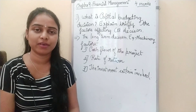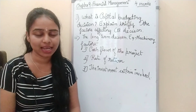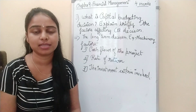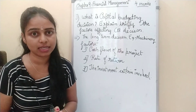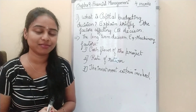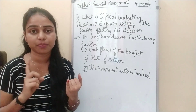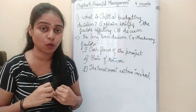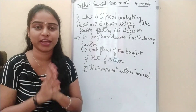Hello everyone, welcome back to CMAS Academy and welcome to the Second PUC Business Studies Easy Class Series. In the last video, we started with Chapter 9: Financial Management. We quickly revised the four factors affecting dividend decision: amount of earnings, stability of earnings, growth opportunities, and cash flow position.